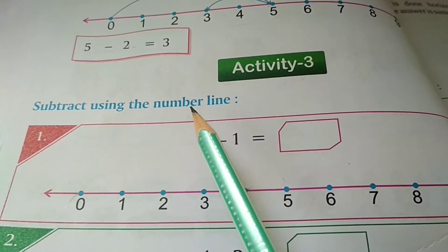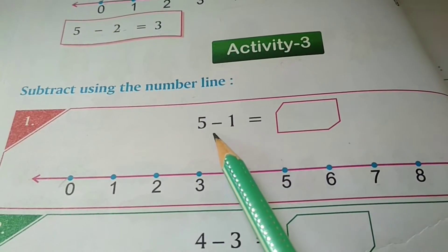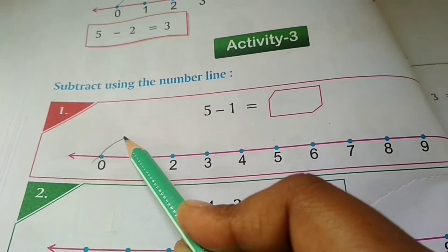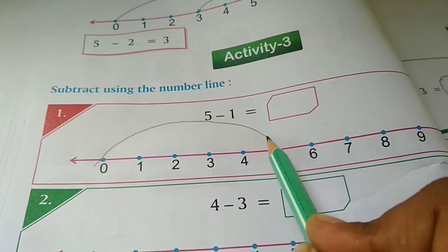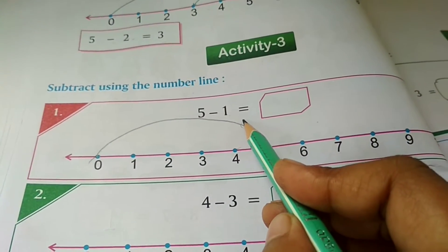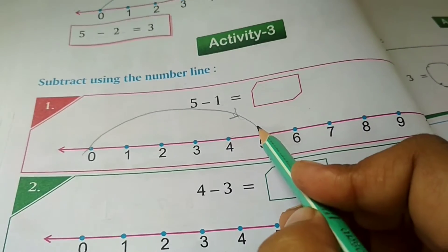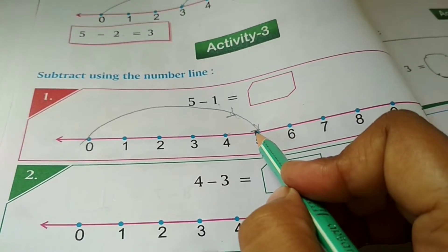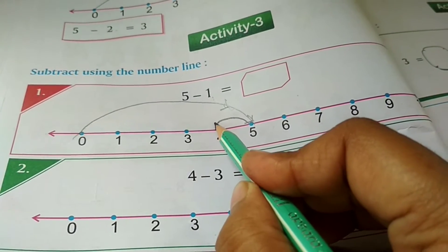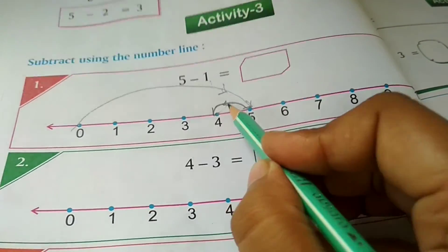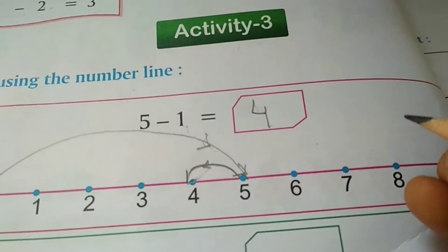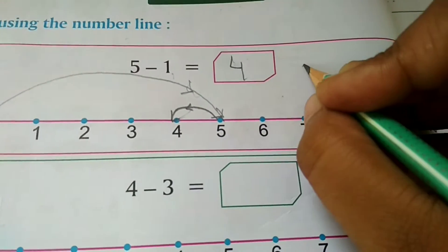Activity number 3, subtract using number line. 5 minus 1. So first 0 to 5. Put the arrow that you can understand. Minus 1. 5 se aapko ek minus karna hai. So answer will be 4. You can do also stick counting to know the answer is right.